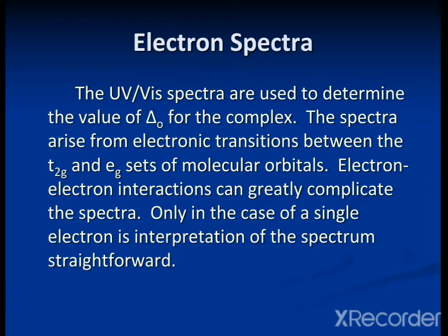UV-visible spectra are used to determine the value of ΔO (crystal field stabilization energy) for complexes. The spectra arise from electronic transitions between the T₂g and Eg sets of molecular orbitals. Electron-electron interactions can greatly complicate the spectra, and only in the case of a single-electron system is interpretation straightforward. In a multi-electron system, inter-electron repulsion occurs, making the spectra of the complex much more complicated and difficult to interpret.